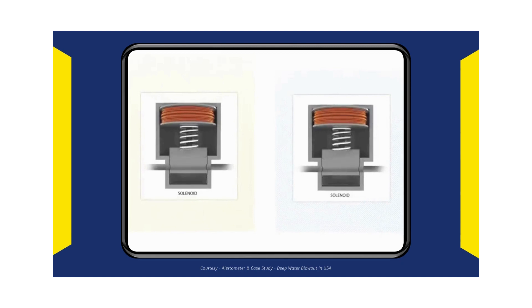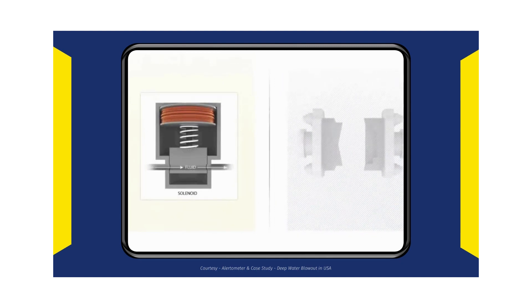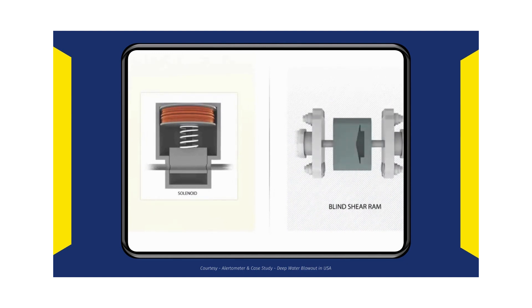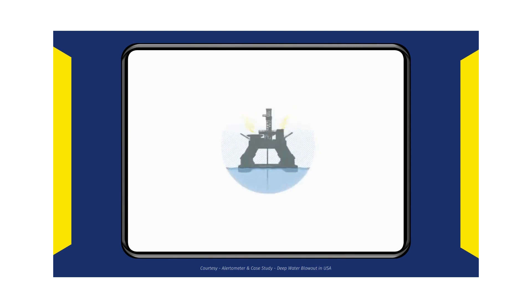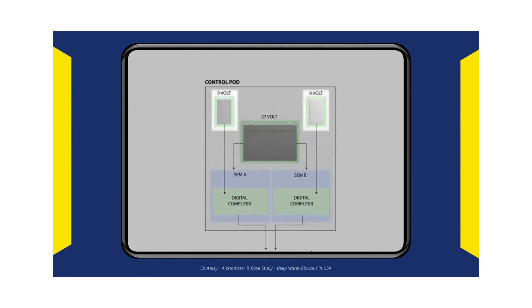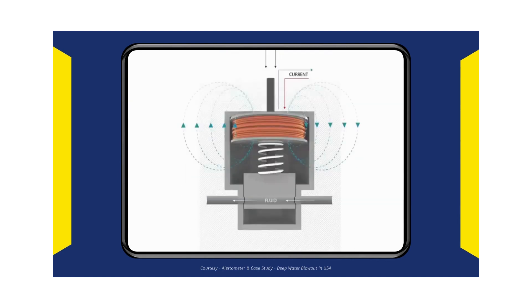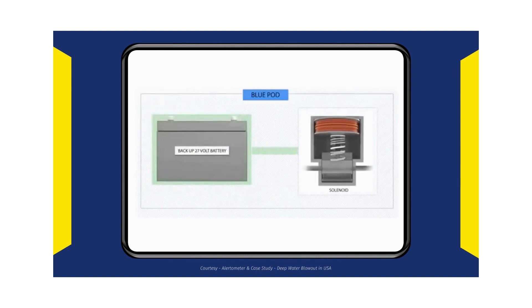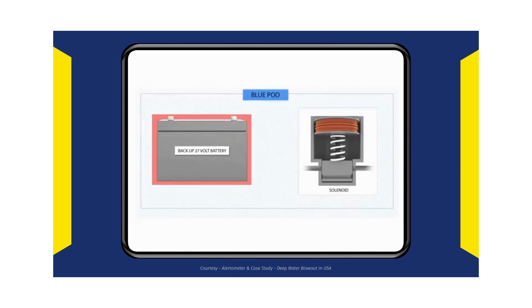When activated, the solenoid valves controlled important BOP functions, such as closing the blind shear ram. If electrical power from the rig was lost, as happened on April 20, 2010, both the yellow and blue control pods contained backup 27-volt and 9-volt batteries to power emergency functions. The 9-volt batteries powered computers that would activate the solenoid valves, which were powered by the 27-volt batteries. However, evidence indicates the blue pod had been miswired at some time before the BOP was lowered onto the seafloor, causing the pod's 27-volt battery to drain and making it impossible to operate the solenoid valve for the blind shear ram on the night of the accident.